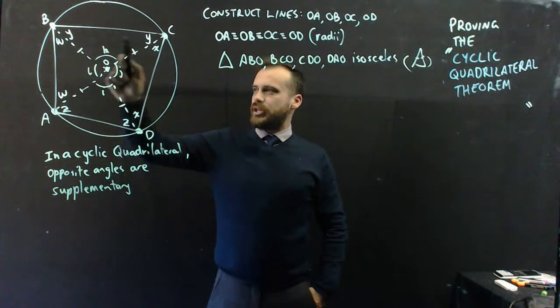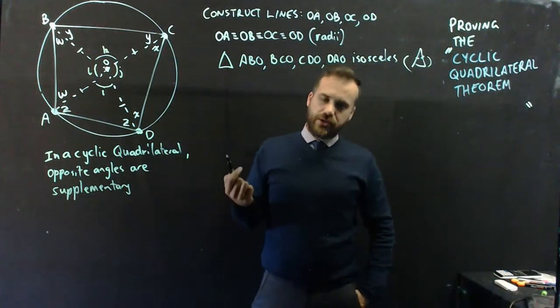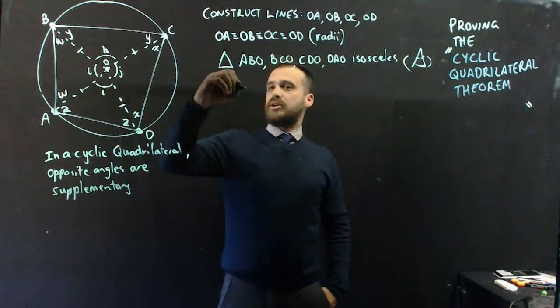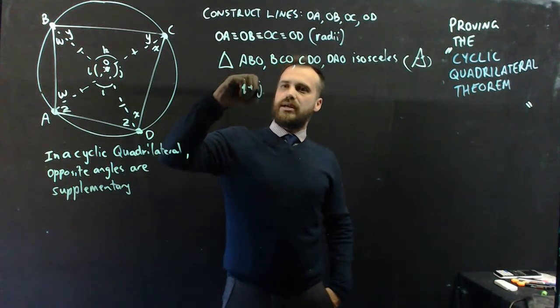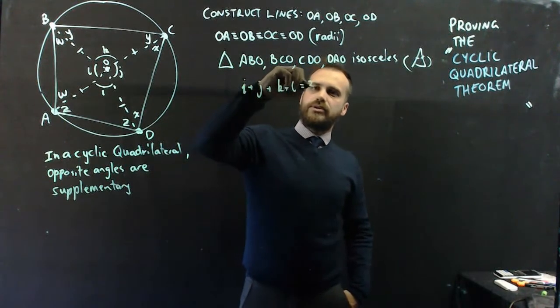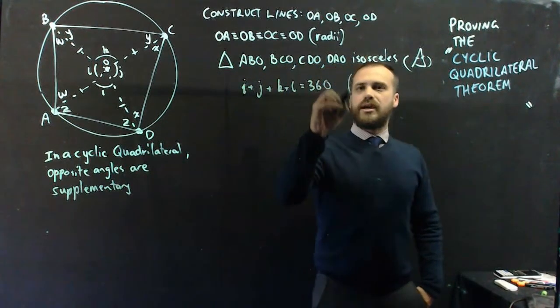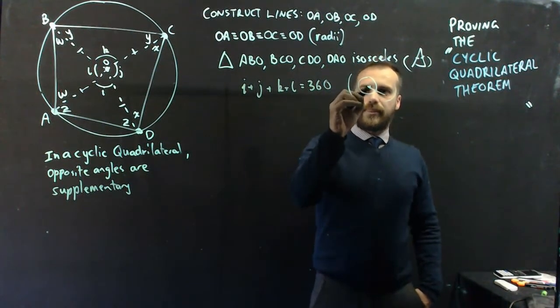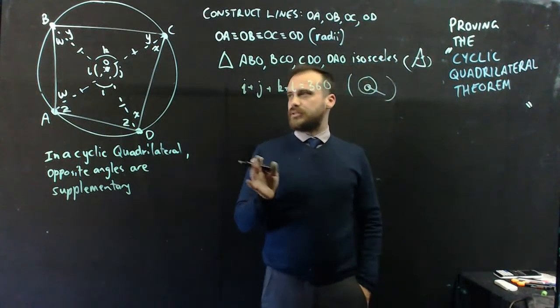And you should note that I, J, K, and L are complementary. They add together to make 360 degrees. So we can say that I plus J plus K plus L equals 360 degrees. And the reason, they're complementary, 360 degrees.